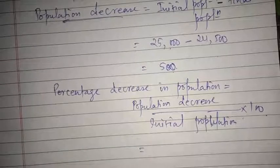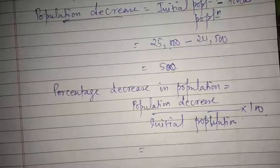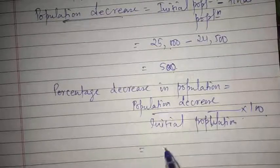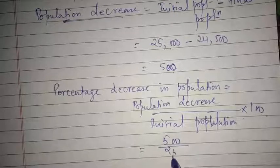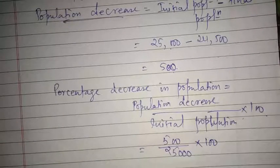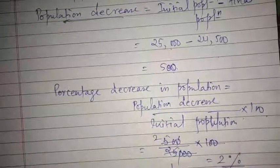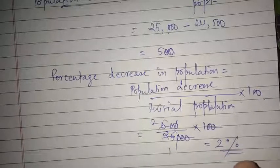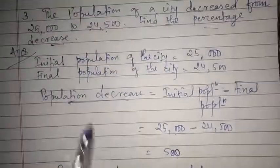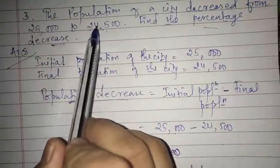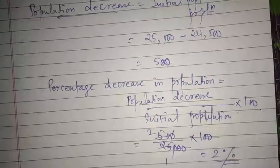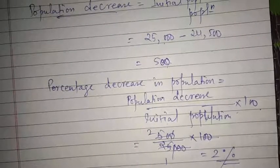Population decrease is 500 divided by initial population 25,000 into 100. The zeros cancel out — 500 over 25,000 simplifies, giving us 2 percent. So there was a 2% decrease in population, meaning from 25,000 to 24,500 is a 2% decrease. Rewind the video if needed to understand it again. Now let us proceed to question number 4.